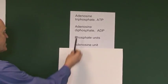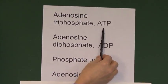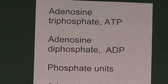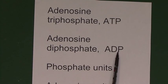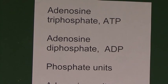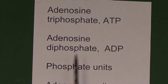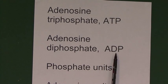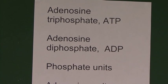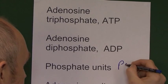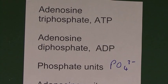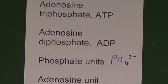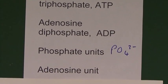So adenosine triphosphate is ATP. Adenosine diphosphate is ADP. And the phosphate units, of which this contains three and this contains two, are the PO4 three-minus ion. They are the phosphate units. And there is a molecular adenosine unit as well.